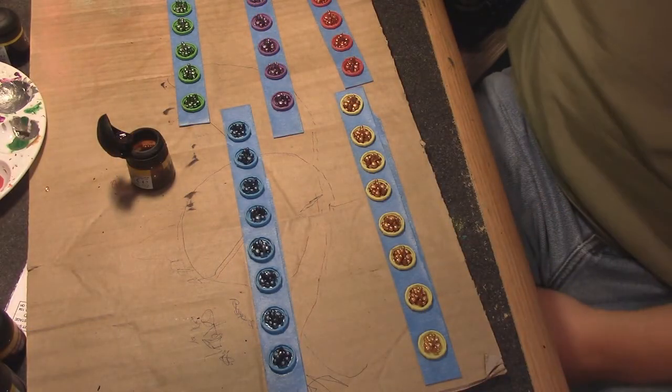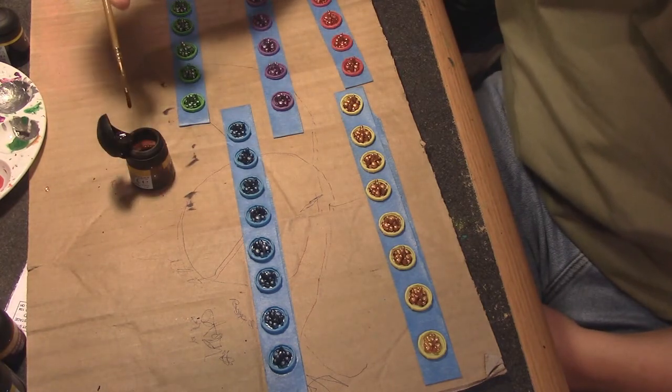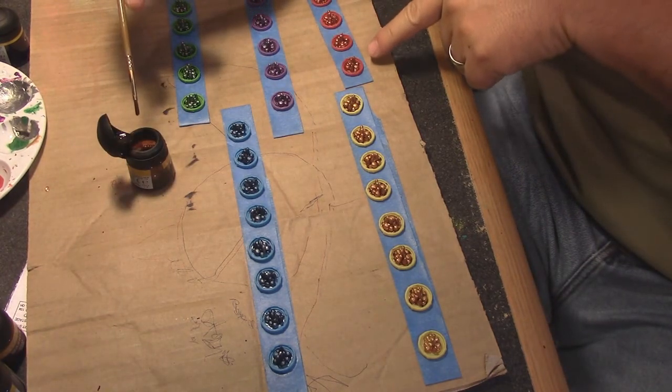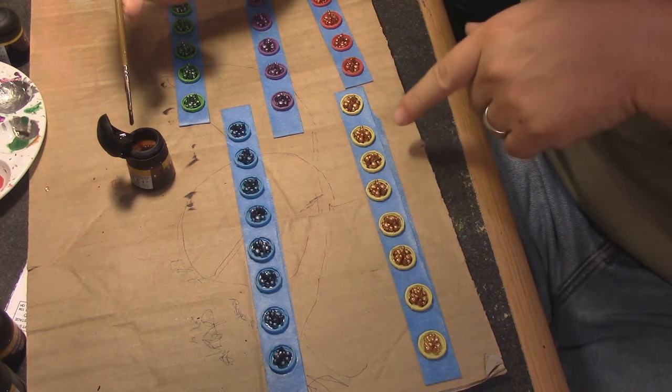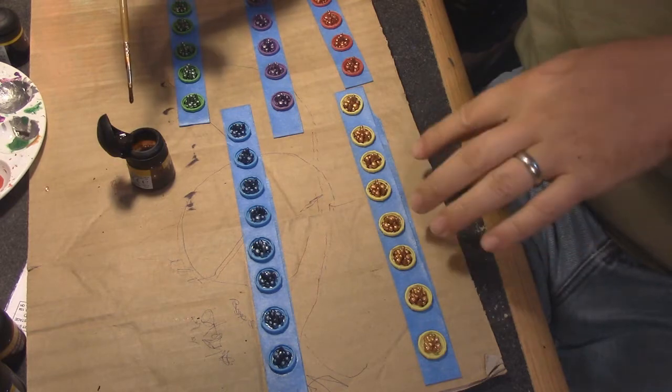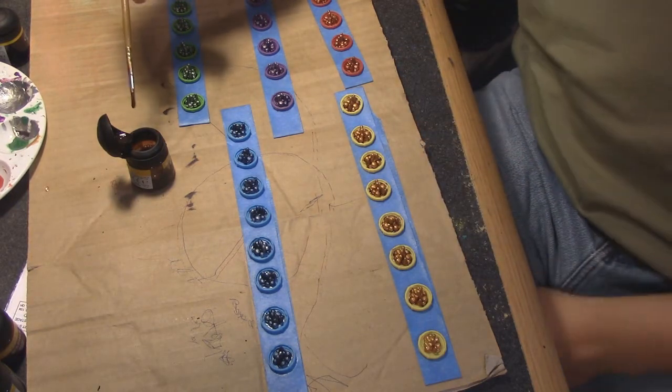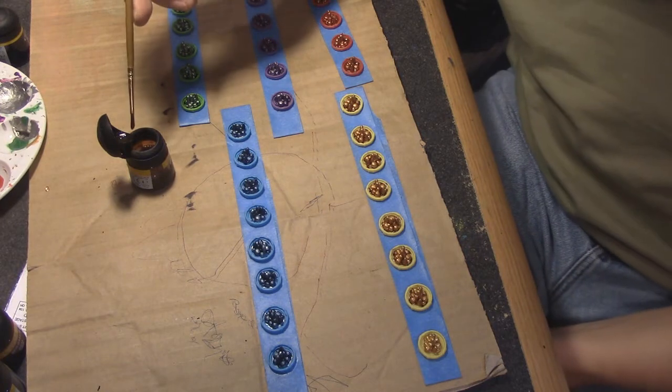All righty, here we are after putting on the washes. As you can see, I went ahead and did do a wash, the red wash on the red, and now I'm doing the Ogryn Flesh, and hopefully it comes across in the video. I mean, it's still wet, waiting for it to dry, but you can see what I was talking about, the kind of red-brown on gold. I think it looks really, really well.